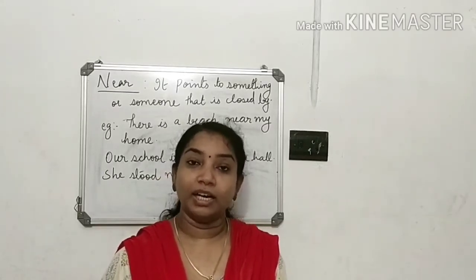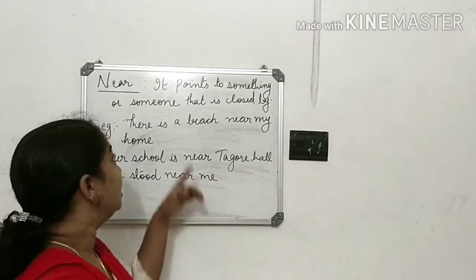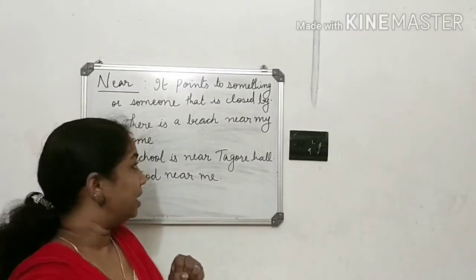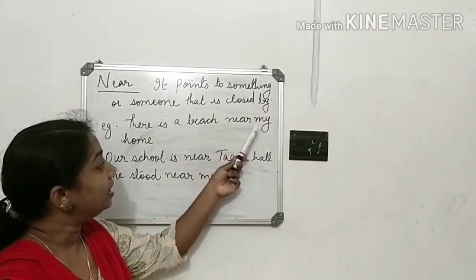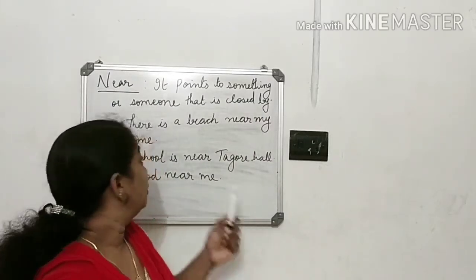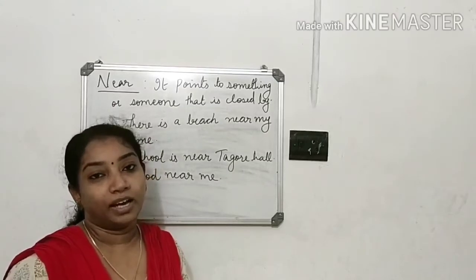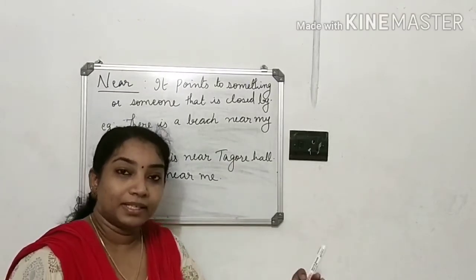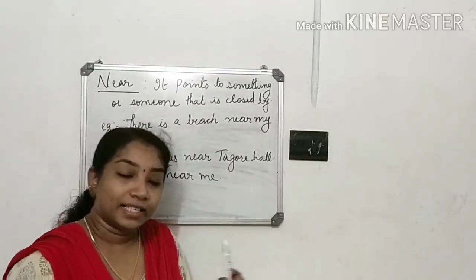Today we are going to study three more prepositions. The first one is 'near'. Near points out something or someone that is close by. For example: 'There is a beach near my home.' The school is near Tagore Hall. She stood near me. So 'near' means close to.